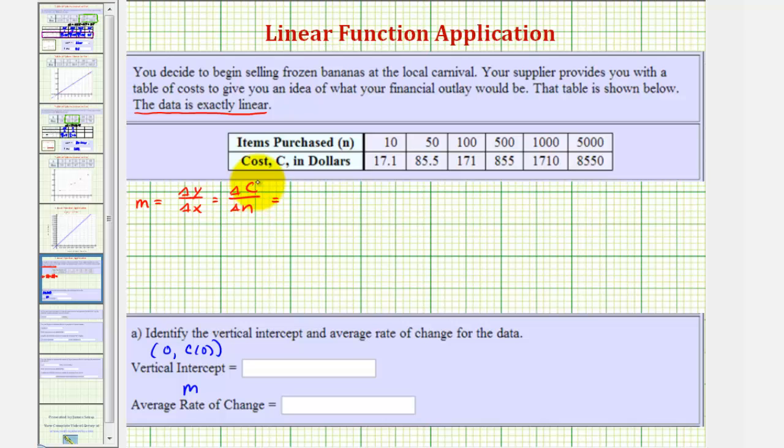Because the table is linear, we can use any two ordered pairs to calculate the slope. Let's go ahead and just use these first two. Notice how the change in the cost would be 85.5 minus 17.1, and the change in n would be 50 minus 10. This gives us 68.4 divided by 40, which is equal to 1.71.